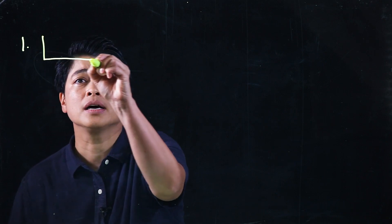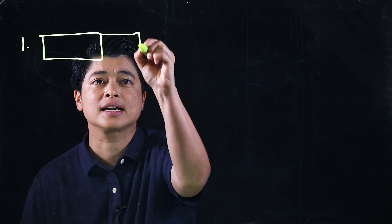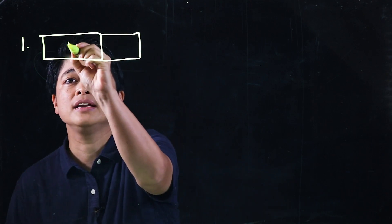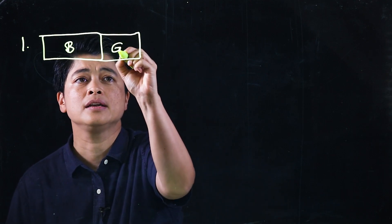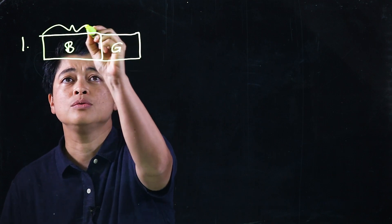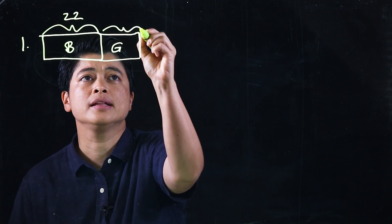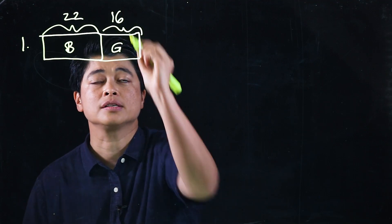Problem 1 says there are 22 boys and 16 girls in Vicky's class. There are 5 more children in Joshua's class than Vicky's class. Question A says how many children are there in Vicky's class. So clearly, the first bar model will have Vicky's class. This is divided into boys and girls, so there are 22 boys and 16 girls.